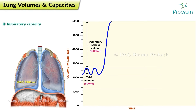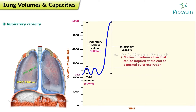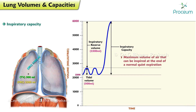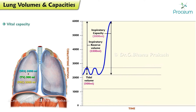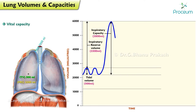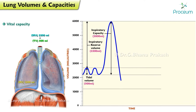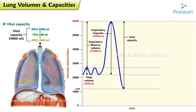Inspiratory capacity: the maximum volume of air that can be inspired at the end of a normal quiet expiration. Inspiratory capacity is equal to inspiratory reserve volume plus tidal volume. Average value of inspiratory capacity is 3,800 milliliters. Vital capacity: the maximum volume of air that can be moved out during a single breath following a maximal inspiration.